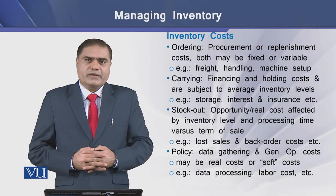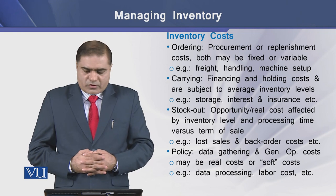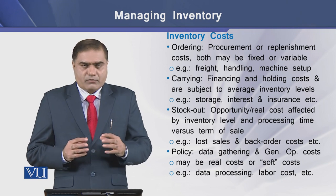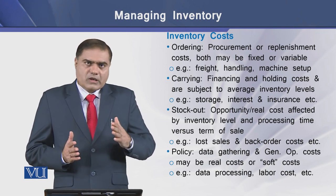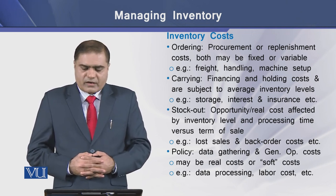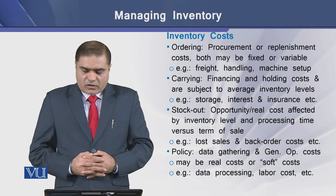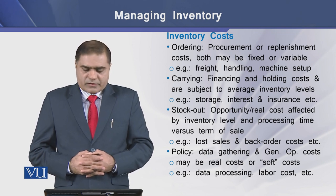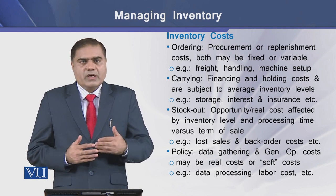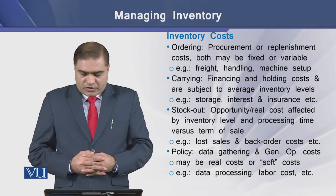There are certain types of inventory costs a firm may bear. The first is the ordering cost, which is the procurement or replenishment cost, and can include both fixed and variable components. Examples include freight, handling, and machine setup costs. Carrying cost refers to the financing and holding cost, subject to the average inventory level or average amount invested over a time period. Examples include storage, interest, and insurance costs.